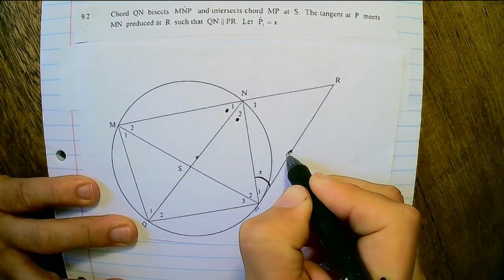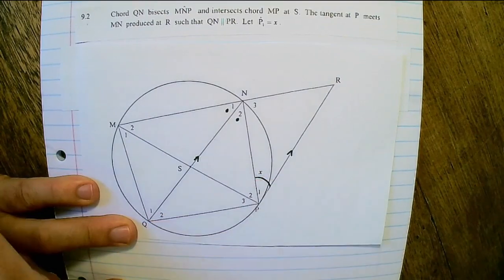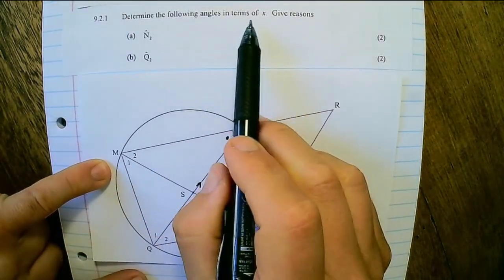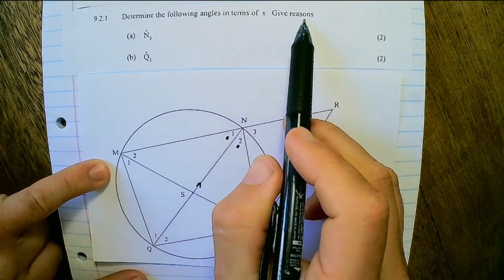So we know that these two lines are parallel to each other. Determine the following angles in terms of X. Give reasons.